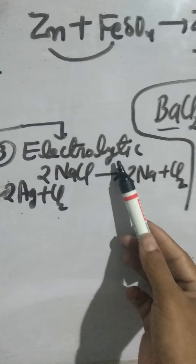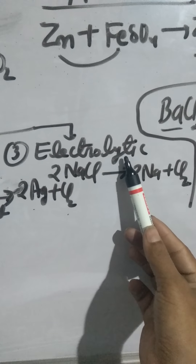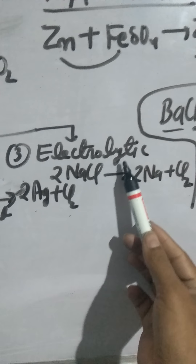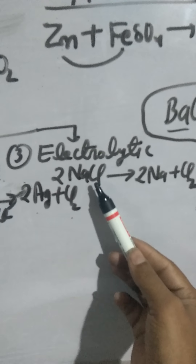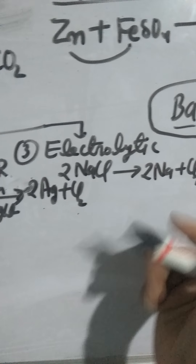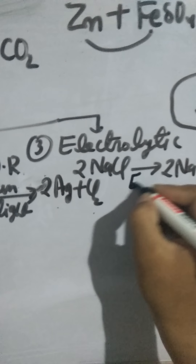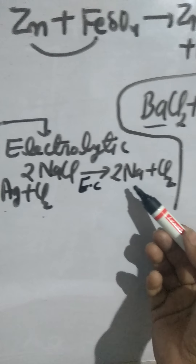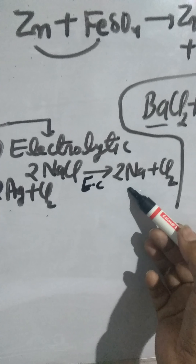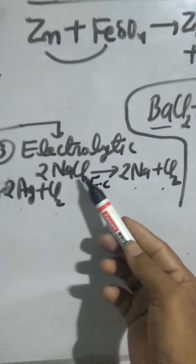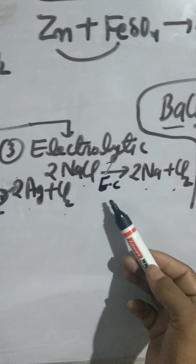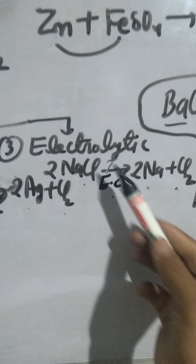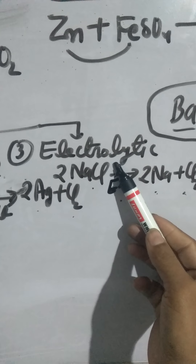Number three: electrolytic decomposition reaction. A decomposition reaction which takes place by electric current is called an electrolytic decomposition reaction. For example, 2NaCl — when electric current passes, it gives 2Na plus Cl2. Decomposition of a compound by passing electric current into its constituents is called electrolytic decomposition reaction.